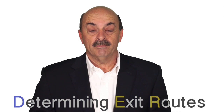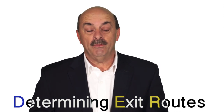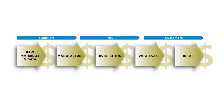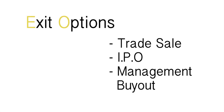Determining exit. First of all, have a look at your industry value chain — competitors, suppliers, customers. The three main options here are the trade sale: who do we sell to? It could be one of those three. An initial public offering, where we go to the stock market. Or a management buyout, where you actually buy out your investors. With a trade sale, it's very interesting to look at upstream, downstream, competitors, and potentials.